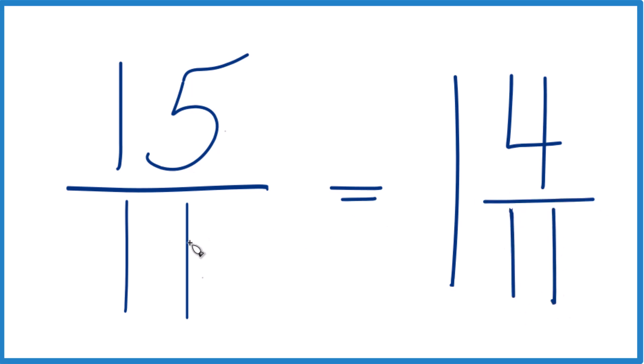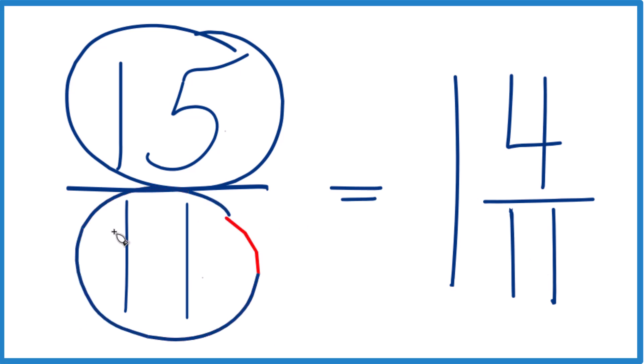And 15 elevenths, the improper fraction, equals the mixed number 1 and 4 elevenths. You can check that because 1 times 11, that's 11. 11 plus 4, there's your 15. And we just keep the denominator the same.